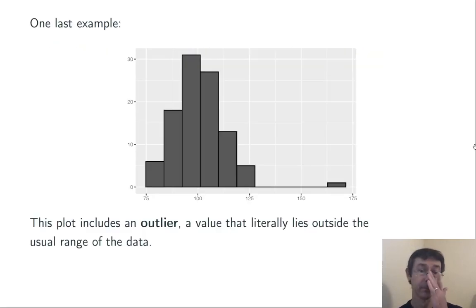One more example. You might be tempted to describe this as right skewed. The tail does go further on the right than on the left. However, that's really just an illusion created by a single value in that data set, that larger value there around 160 or 170.